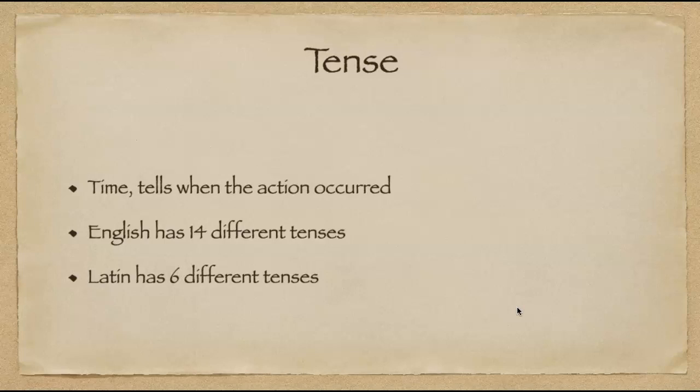Latin has six different tenses and from that we can make a couple of reasonable inferences. First of all, that there's more than one way to translate some of these Latin tenses into English and second of all, they're not going to all have the same. So some tenses will have more translation than others. So Latin has six tenses. English has 14.